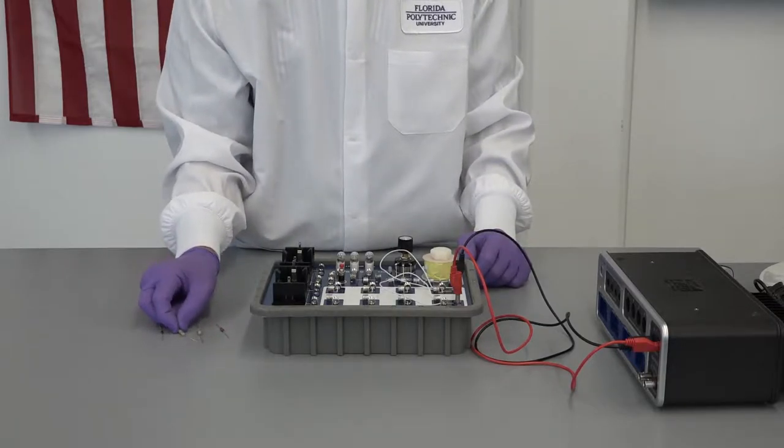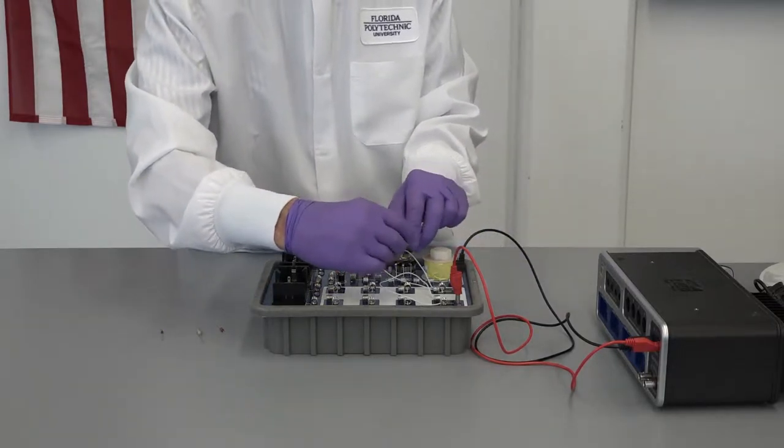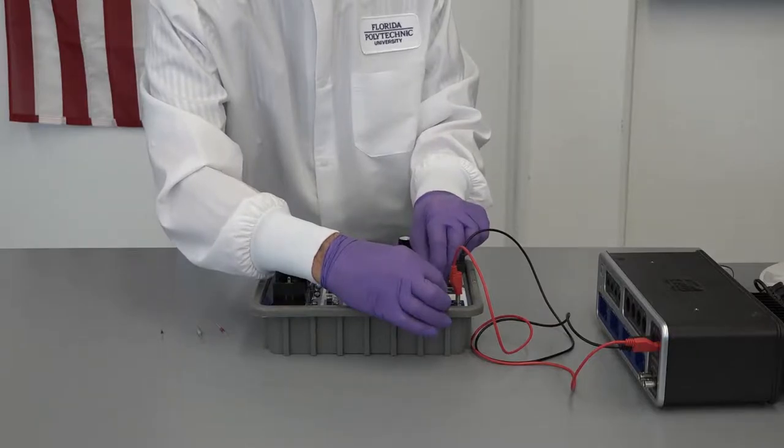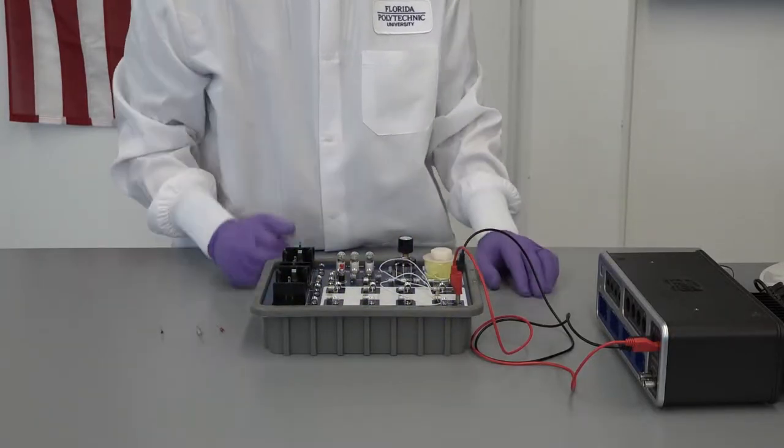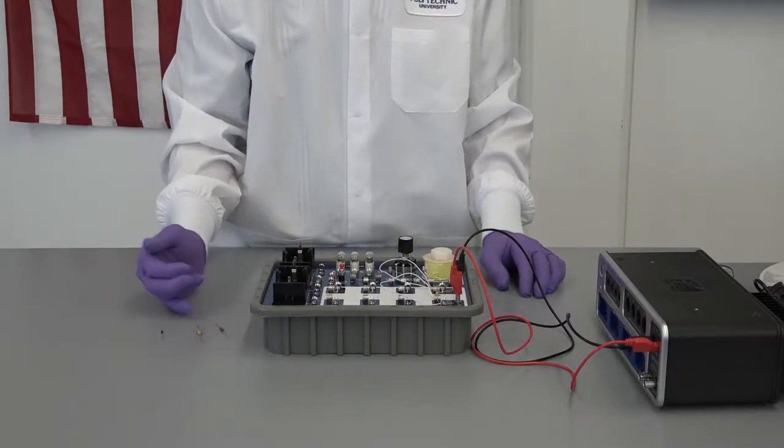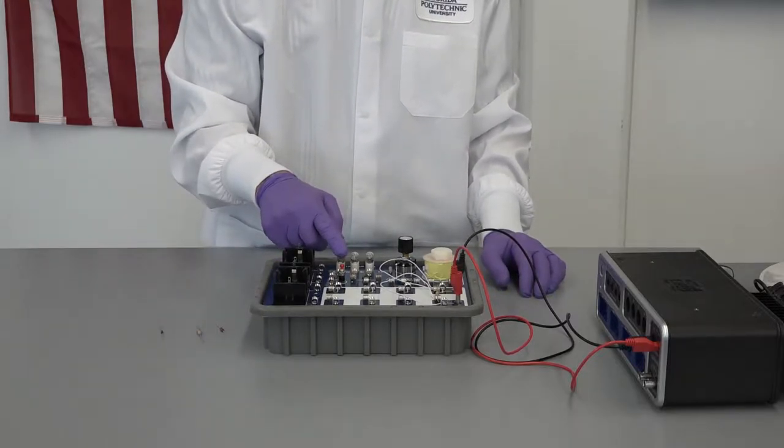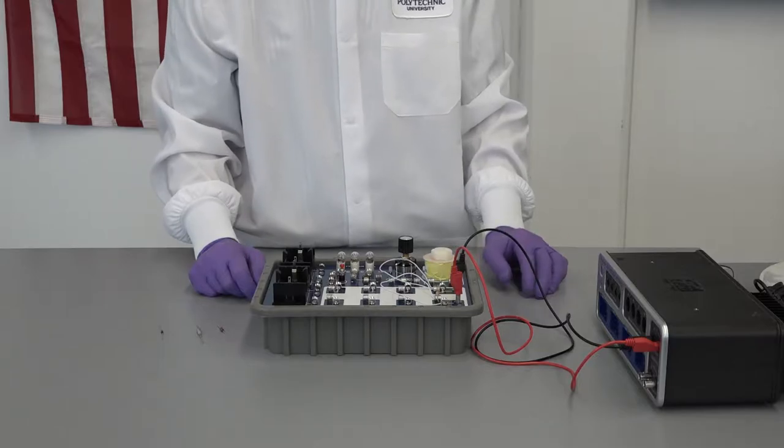We will start off with our 330 ohm resistor. Just place it right in the springs. We will take our reading. We will do it with the other resistors, the diode, and the light bulb.